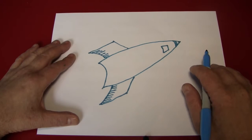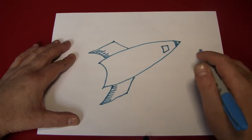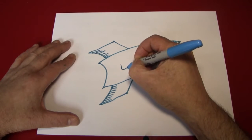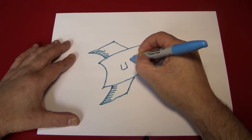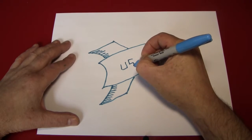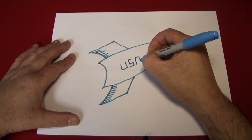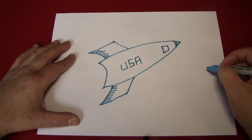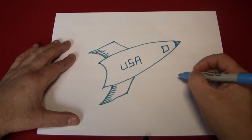But because I can't really draw one that easily, I'm going to make USA. And a lot of rocket ship toys will have that kind of marking.